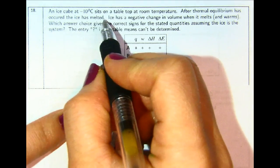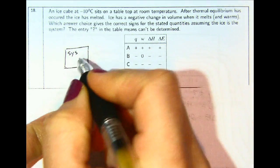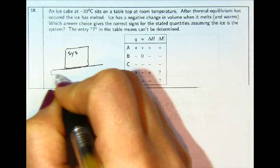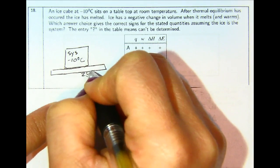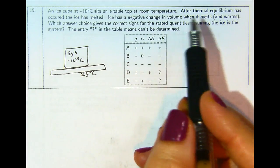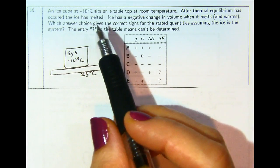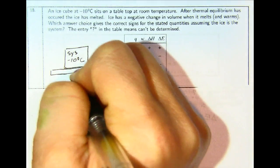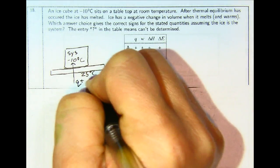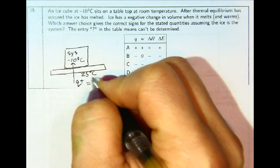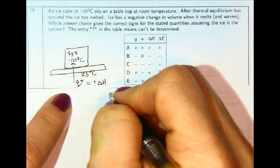An ice cube at negative 10 degrees Celsius sits on a tabletop at room temperature. The system is the ice cube and the surroundings are the table at 25 degrees Celsius. After thermal equilibrium occurs, the ice has melted. Heat always moves from hot to cold, so heat is going into the system, meaning Q is positive. We can assume constant pressure since only atmospheric pressure is present, so Q and delta H have positive values.